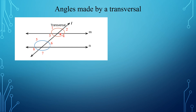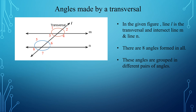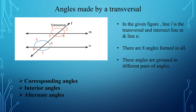The transversal intersects the two given lines at two points. You will find that a total of eight angles are made by the transversal — one, second, third, fourth, fifth, sixth, seventh, eighth. So in this figure there are eight angles formed in all. These angles are grouped into different pairs: corresponding angles, interior angles, and alternate angles.